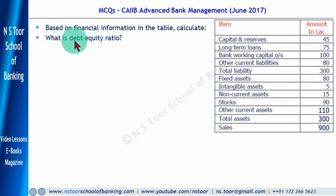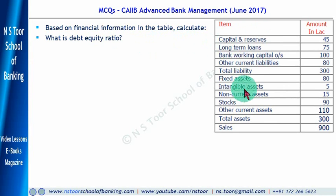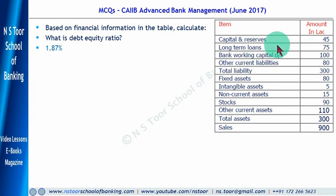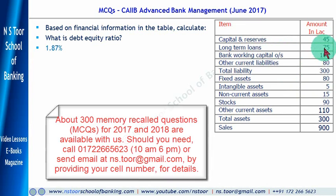First question: What is the debt equity ratio? To calculate the debt equity ratio, we need long-term loans and tangible net worth. Tangible net worth equals capital and reserves minus intangible assets, which is 45 minus 5 equals 40. So the ratio is 75 divided by 40, giving us 1.87.